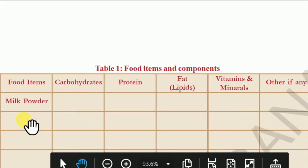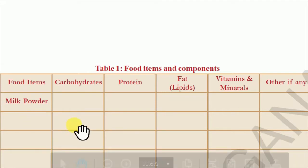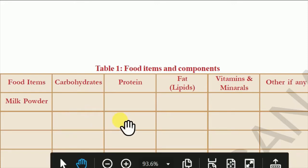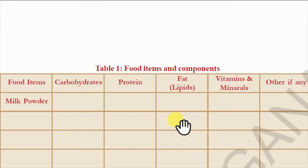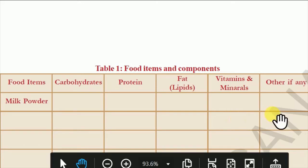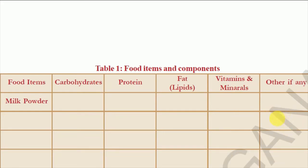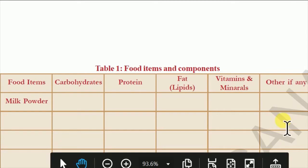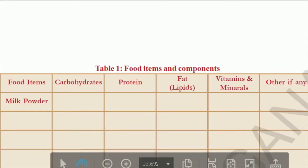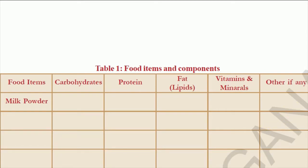For the second food item, write any favorite food — for example, biryani. Carbohydrates are present — tick mark. Proteins are present — tick mark. Fats are present — yes, because without oil the recipe cannot be prepared. Vitamins — tick mark. Under 'other,' write it is rich in nutrients; spices are added, so ask your mother what is added.